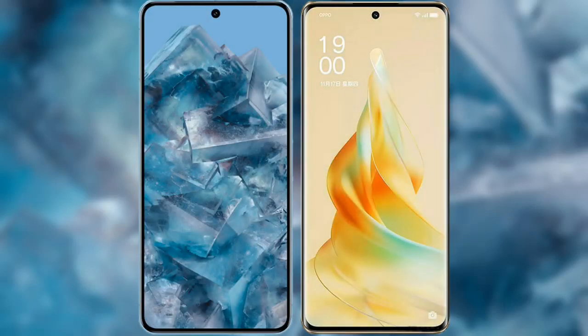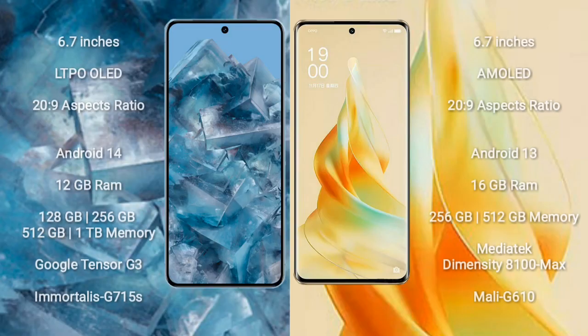I will compare the new Google Pixel 8 Pro with Oppo Reno 9 Pro. Google Pixel 8 Pro comes with a 6.7-inch LTPO OLED display and an aspect ratio of 20:9. Oppo Reno 9 Pro comes with a 6.7-inch AMOLED display and an aspect ratio of 20:9.